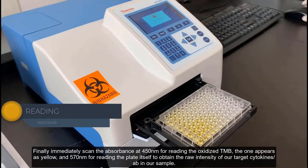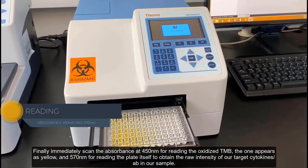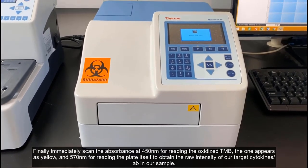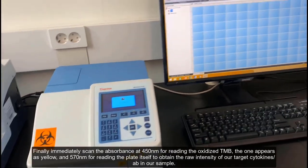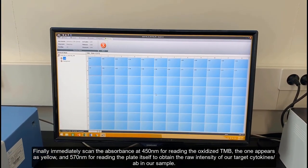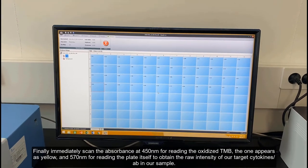Finally, immediately scan the absorbance at 450 nm for reading the oxidized TMB, which appears as yellow, and 570 nm for reading the plate itself to obtain the raw intensity of our target cytokines or antibodies in our sample.